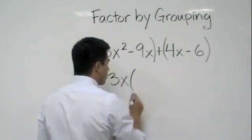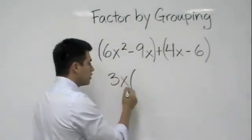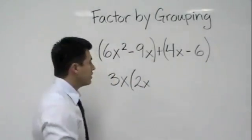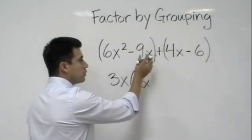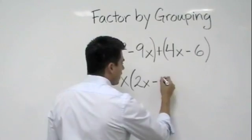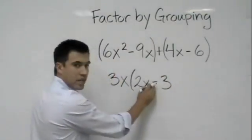What's left over in the parentheses? Well, 3x times what will give you 6x squared? That would be 2x. And then 3x times what will give you 9x? Well, that would just be 3. And we go ahead and we keep that sign right here.